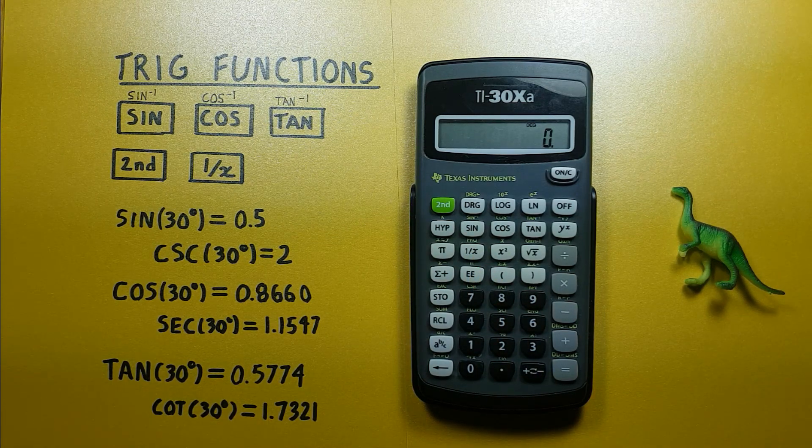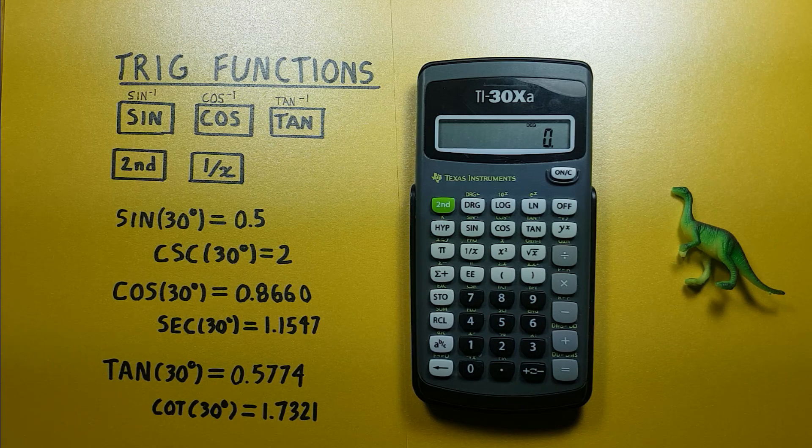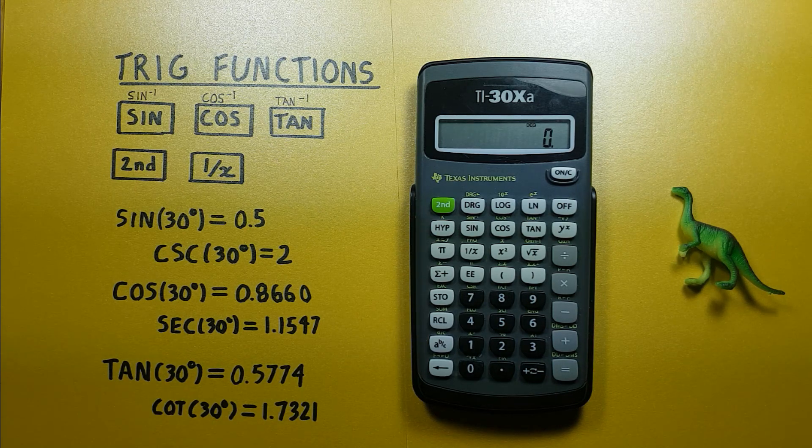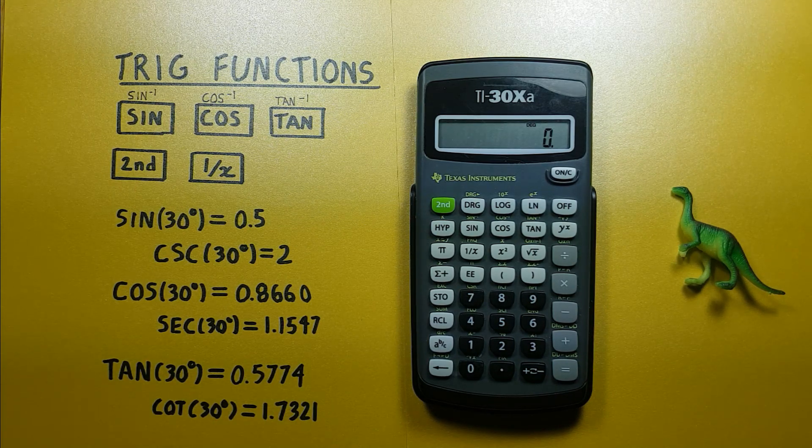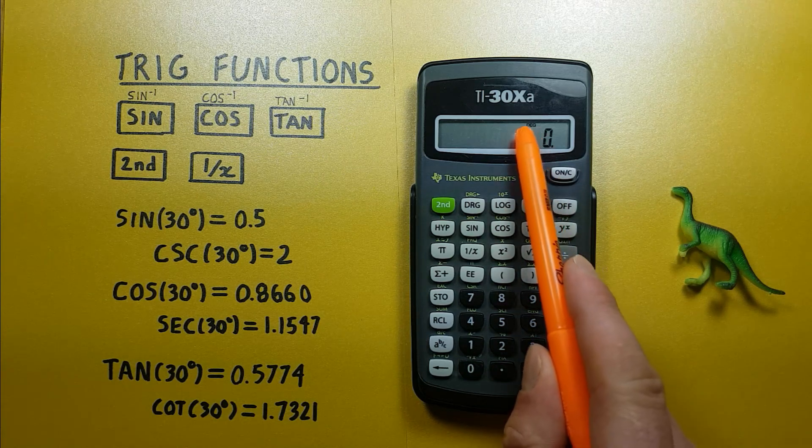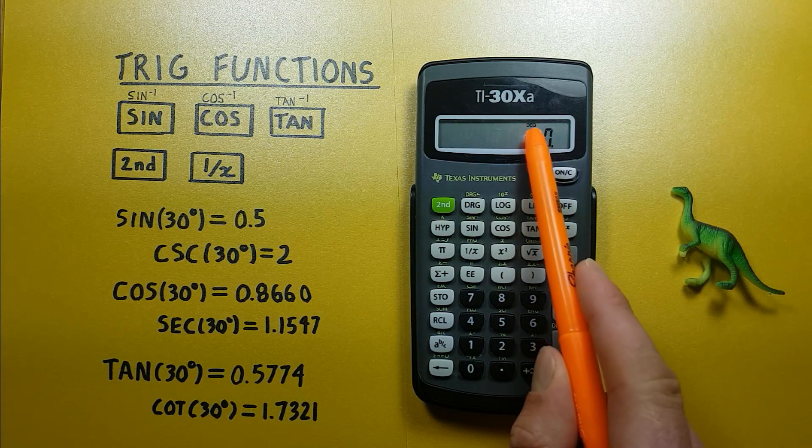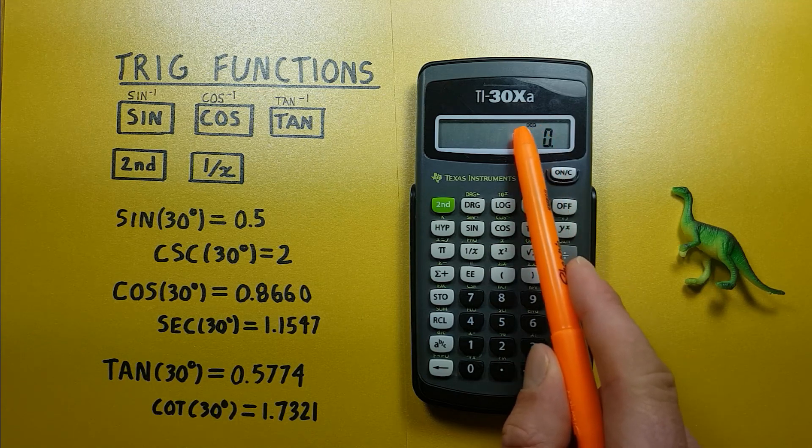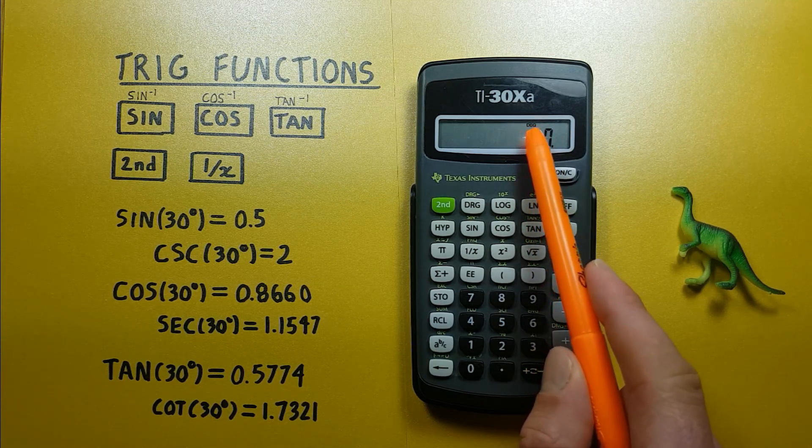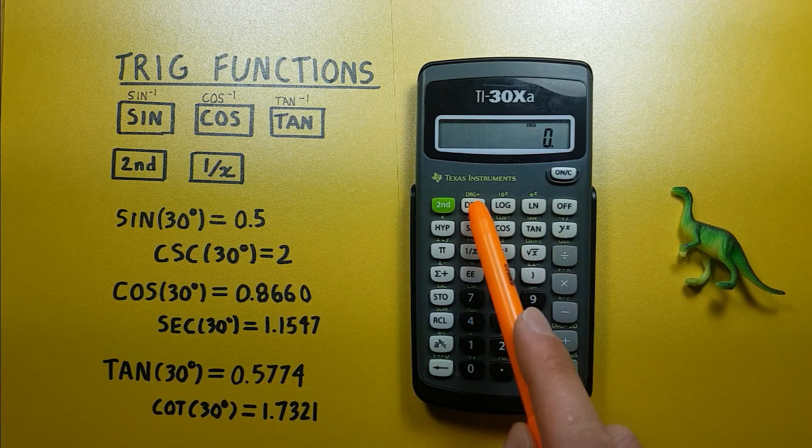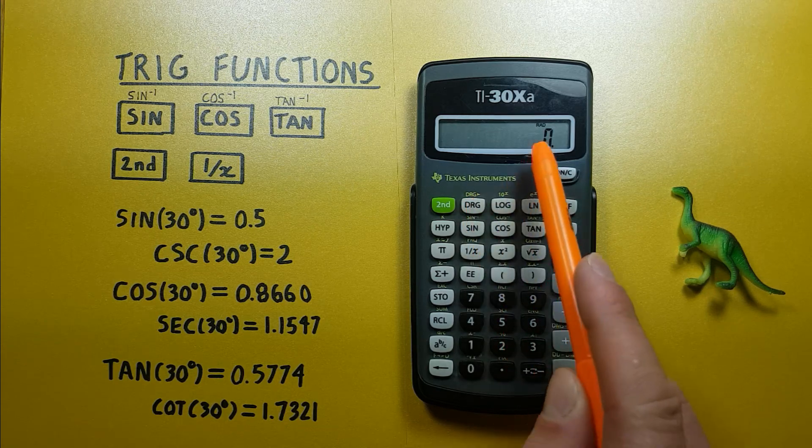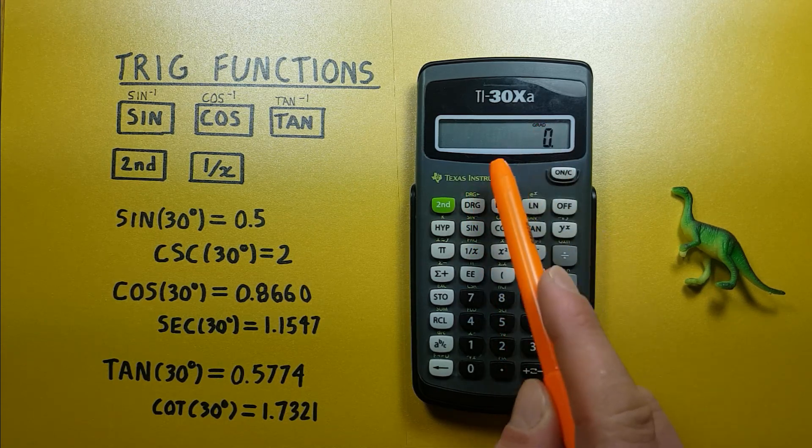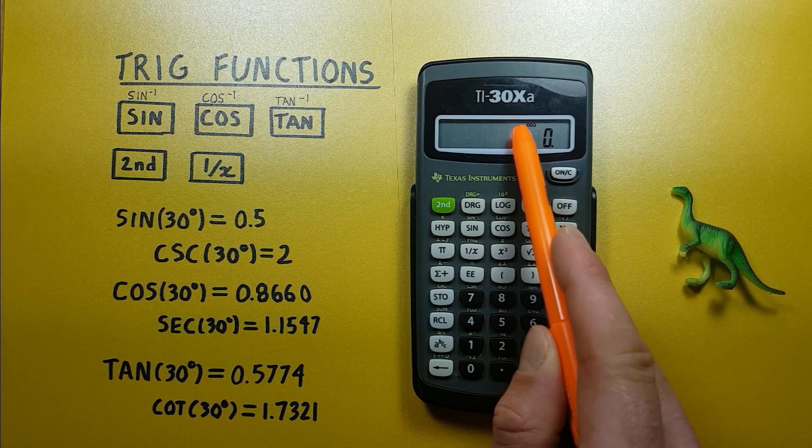Now the examples I'll be doing here will be using degrees, so the first thing we want to do is make sure our calculator is set to degrees. You can confirm that it is by seeing the DEG on the top of the screen here. If you don't see DEG but rather see RAD or something like that, you can change it by pressing the DRG button here. So you might see RAD or you might see grad, but keep pressing it until you see DEG.